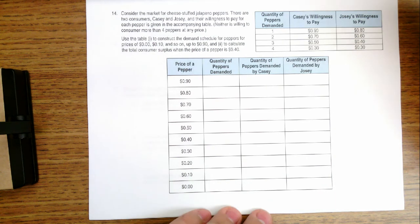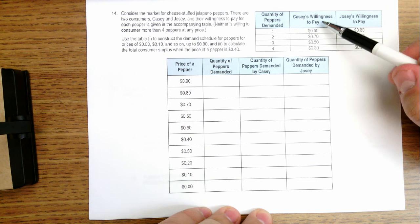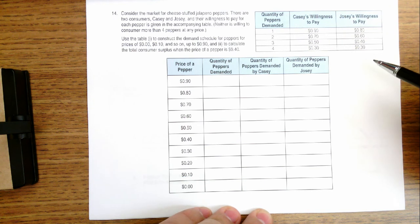This question is asking us essentially to derive the demand for cheese-stuffed jalapeño peppers based on our knowledge of Casey's and Josie's willingness to pay, and then to figure out what the consumer surplus is if the price of a pepper is $0.40.